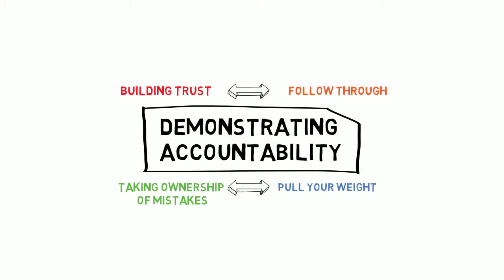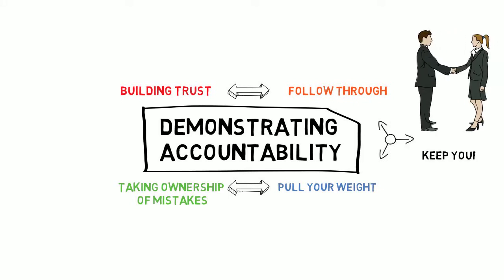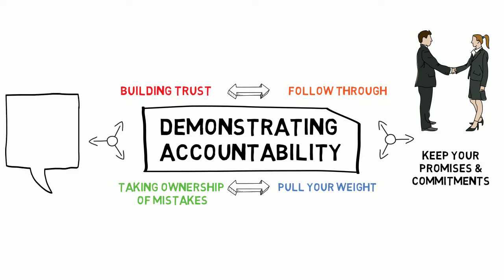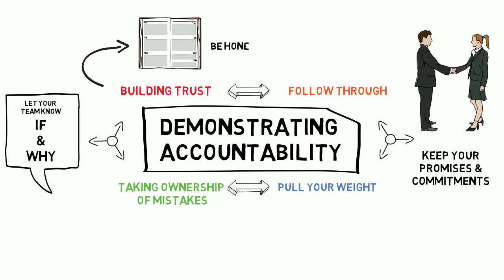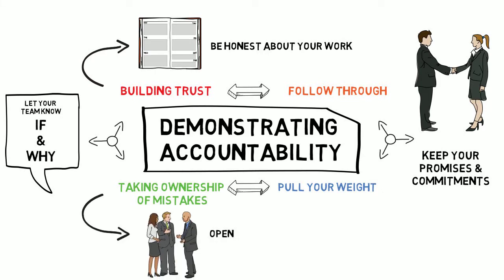You can demonstrate accountability on your team by following through on any commitments or promises you have made to your team, letting your team know if and why you cannot meet your commitments, being honest about whether you have not completed your work and openly admitting it. You do not make excuses or fake that your work has been done.